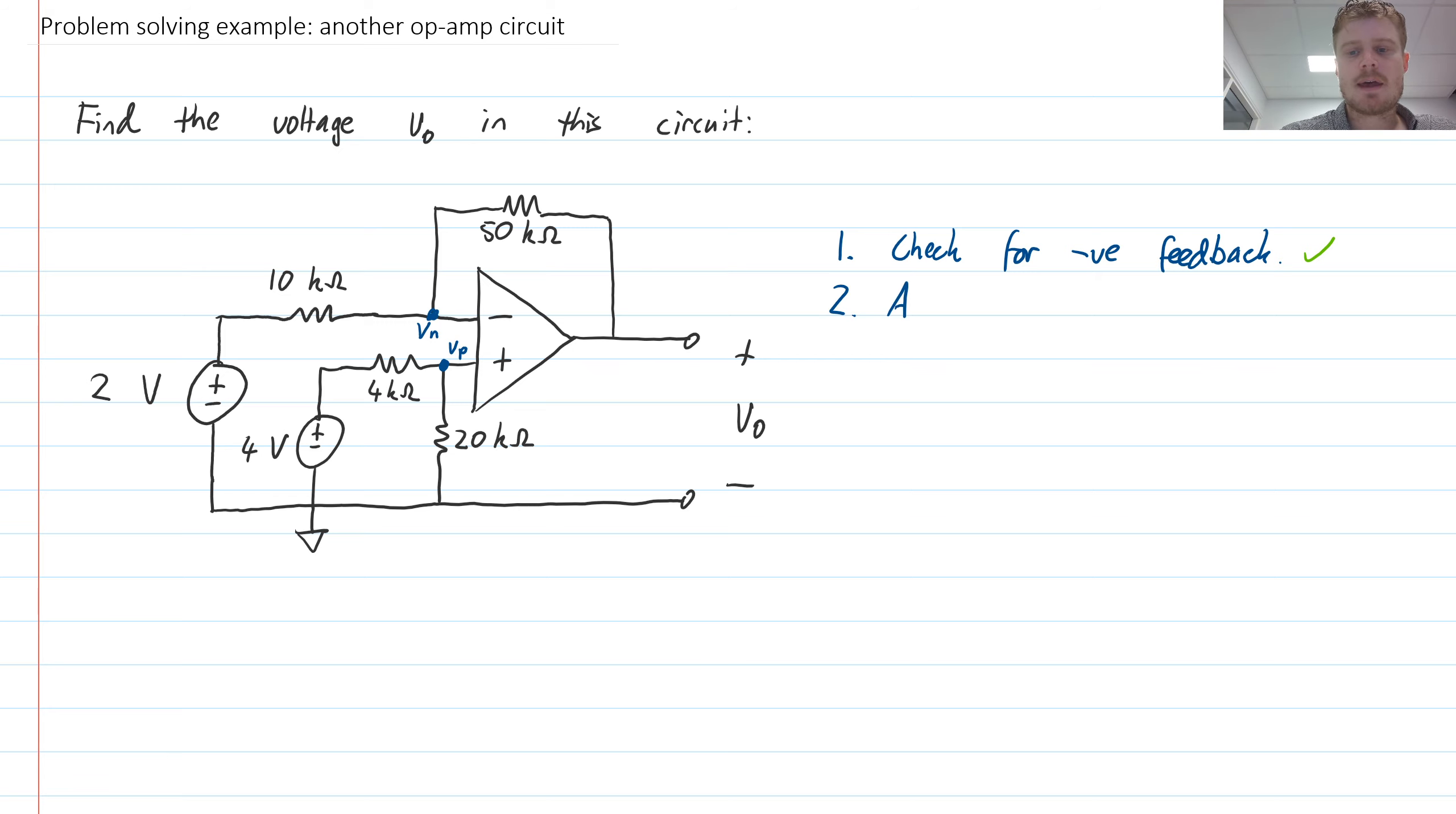Now, we then assume a few things about voltages and currents. In particular, vn is equal to vp, and also no current flows into the op-amp inputs. Assume no current flows into the op-amp inputs.